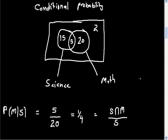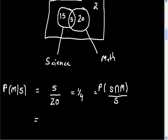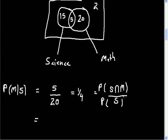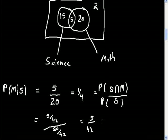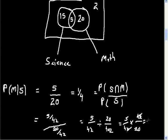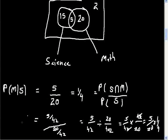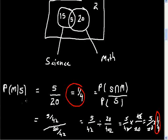In the exam, work with probabilities rather than raw values. P(M|S) = P(S ∩ M) / P(S). P(S) = 20/42 and P(S ∩ M) = 5/42. Dividing: (5/42) ÷ (20/42) = 5/42 × 42/20 — the 42s cancel — leaving 5/20 = 1/4. Same answer as with raw values.